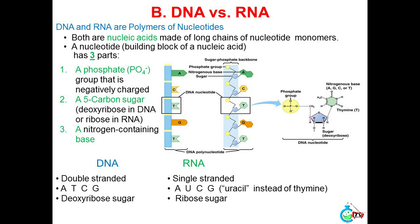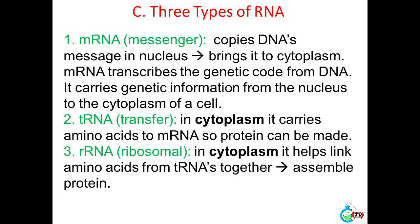Deoxyribose sugar in DNA; ribose sugar in RNA. C. Three types of RNA: (1) mRNA (messenger RNA) — copies DNA's message in the nucleus and brings it to the cytoplasm; transcribes the genetic code from DNA and carries genetic information from the nucleus to the cytoplasm. (2) tRNA (transfer RNA) — in the cytoplasm, carries amino acids to mRNA so protein can be made. (3) rRNA (ribosomal RNA) — in the cytoplasm, helps link amino acids from tRNAs together to assemble protein.